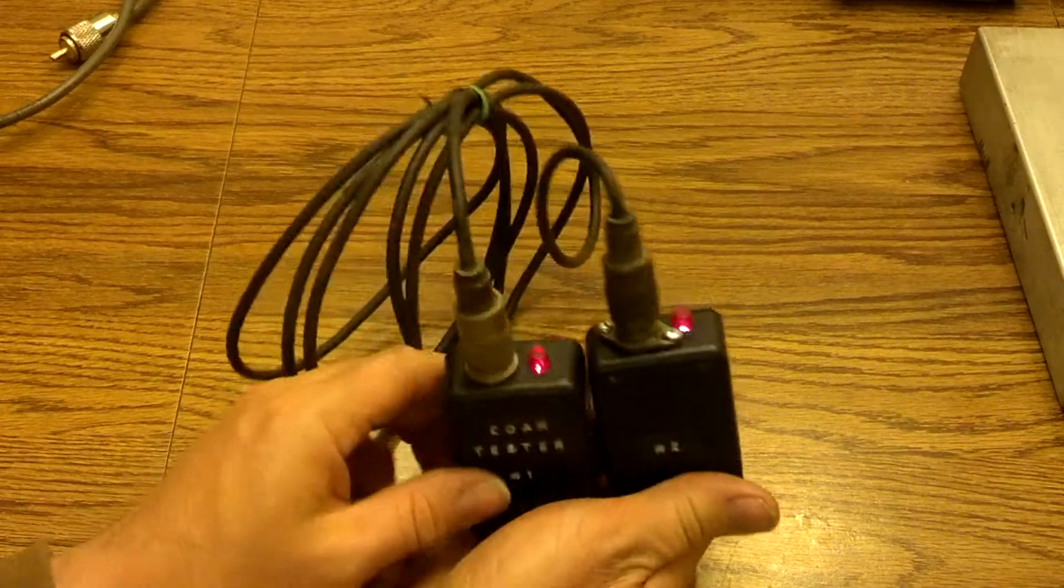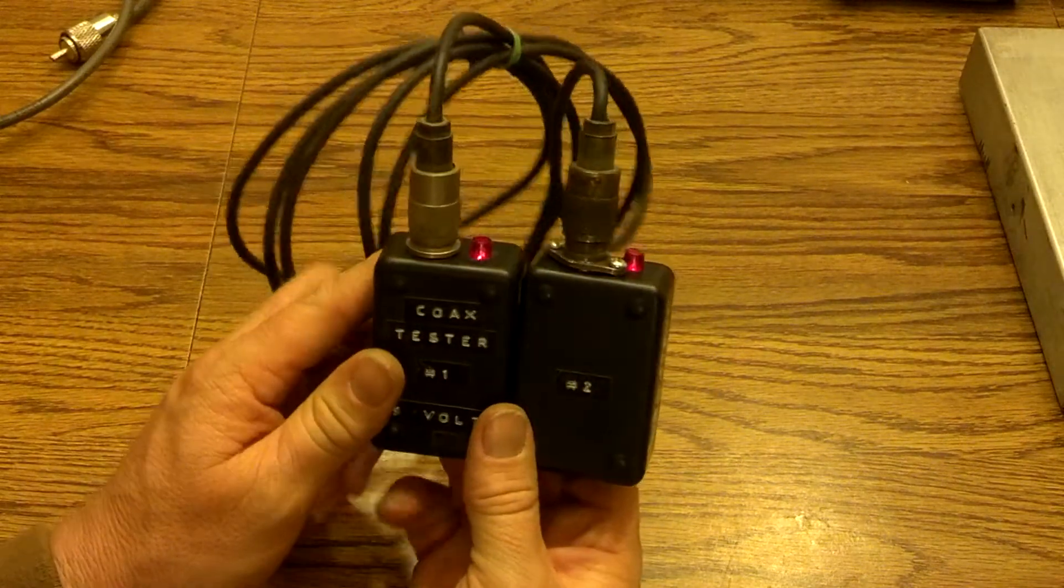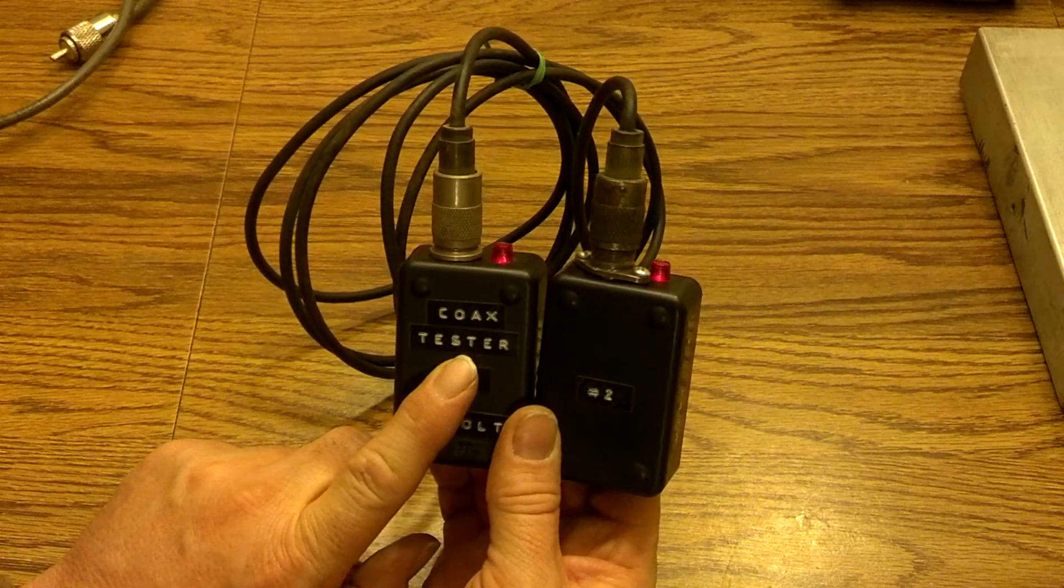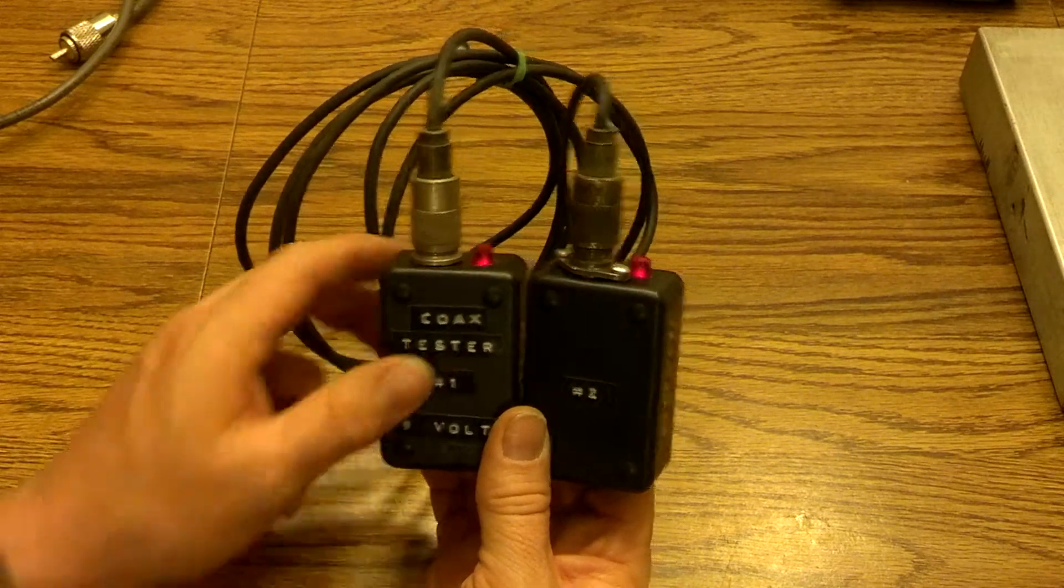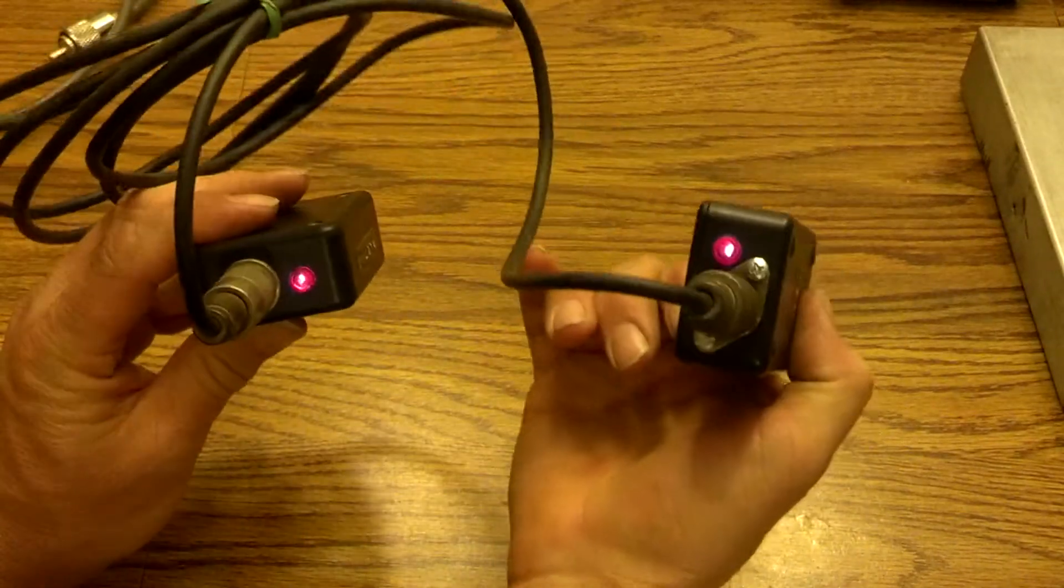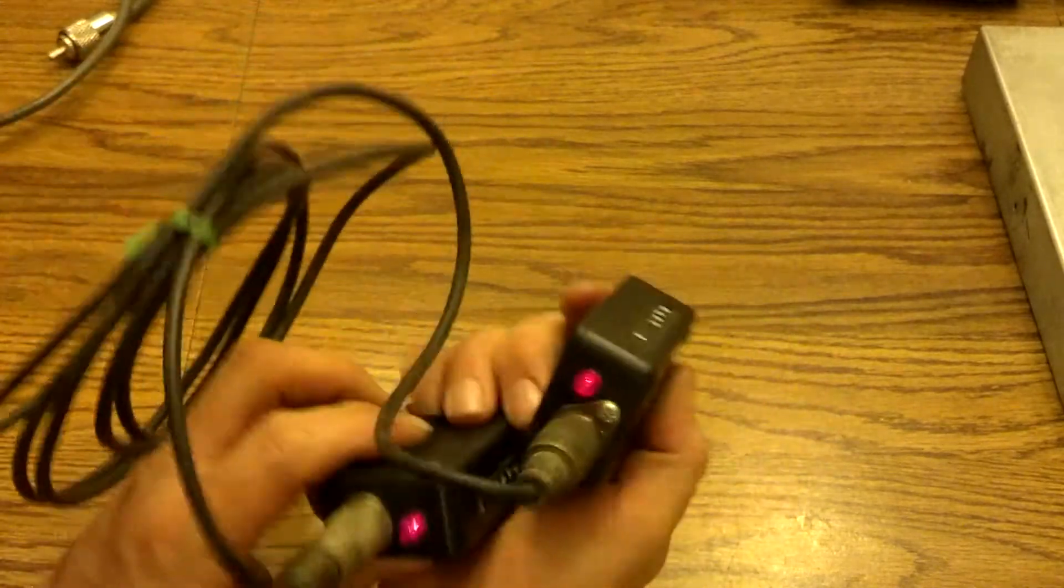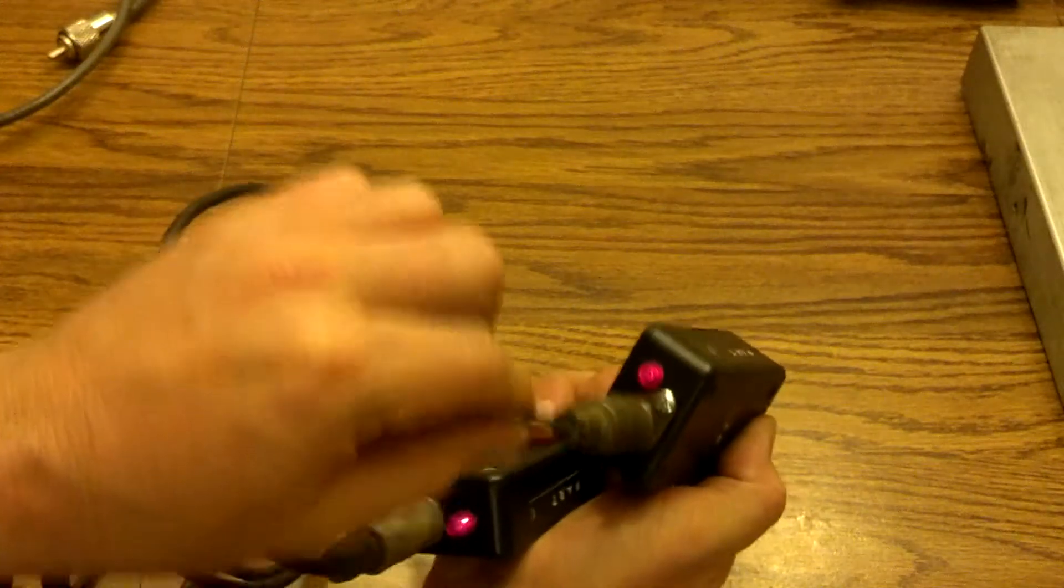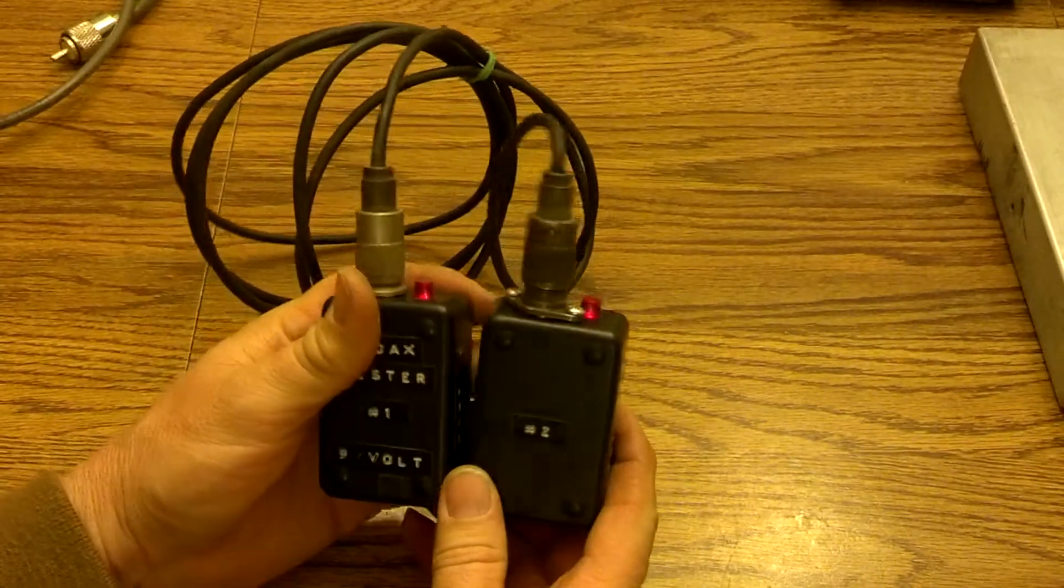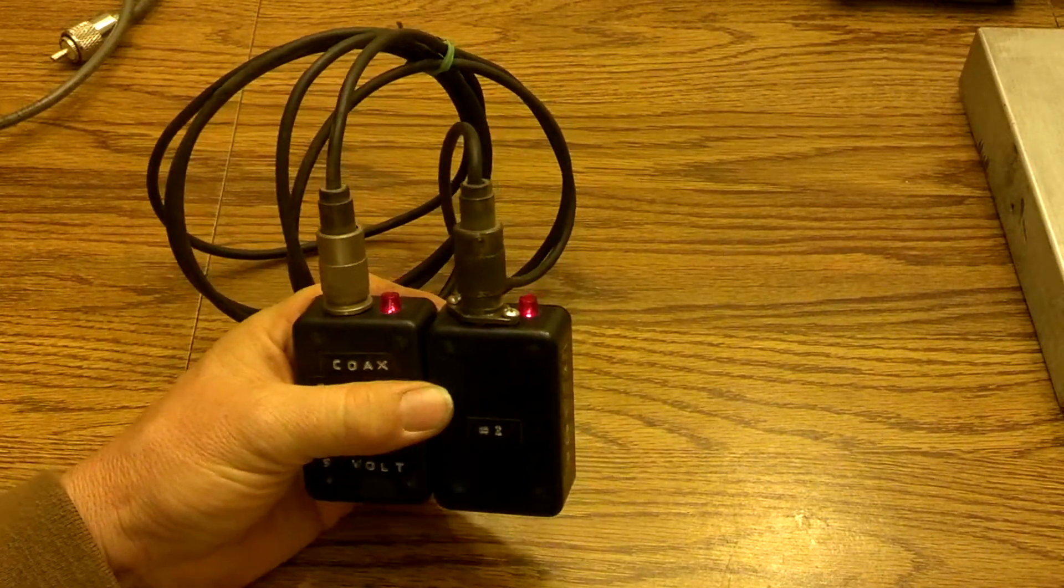So just a little something I put together for checking coax cables. You can put one down by the radio, take one up the antenna tower or whatever. And you should see two lights. If you got that, you wiggle them, good coax. So that's just a little checker I come up with. Hope y'all like it.